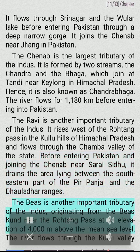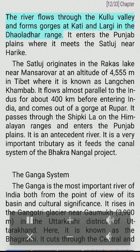The Ravi is another important tributary of the Indus. It rises west of the Rohtang Pass in the Kullu hills of Himachal Pradesh and flows through the Chamba valley before entering Pakistan, joining the Chenab near Sarai Sidhu. It drains the area lying between the southeastern part of the Pir Panjal and the Dhauladhar ranges. The Beas is another important tributary, originating from the Beas Kund near the Rohtang Pass at an elevation of 4,000 meters, flowing through the Kullu valley and forming gorges at Kati and Largi in the Dhauladhar range.